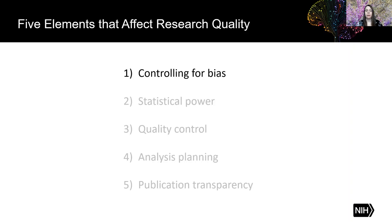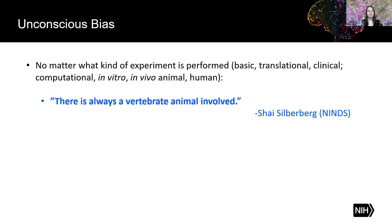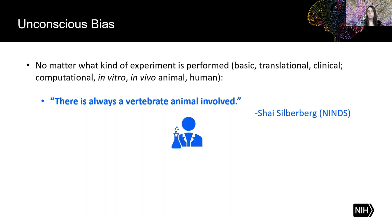First, let's look at controlling for bias. I get a lot of questions from scientists about whether rigor and transparency are relevant to all kinds of science — like basic translational and clinical science, computational sciences, in vitro or in vivo animal studies. Well, like my colleague Shai Silverberg likes to say, no matter what kind of experiment is being performed, there's always a vertebrate animal involved. And who is that vertebrate animal? It's us — the humans. And humans can be biased.